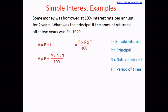Let's look at our problem now. It says borrowed at 10% interest rate per annum, so R equals 10 per year. The money is borrowed for 2 years, so T equals 2. And the amount returned after 2 years was 1,920, so A equals 1,920.